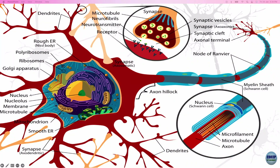A neuron has only one axon but multiple dendrites. Synapses occur when the dendrite of one neuron connects to the axon of another — that connection is called a synapse. This is how they transmit messages. Through the axon, there is an electric current, but at the pre-synaptic and post-synaptic junction there is a chemical messenger — the neurotransmitter.